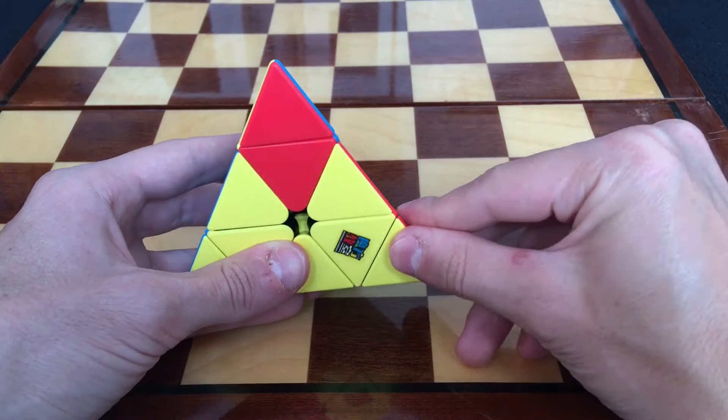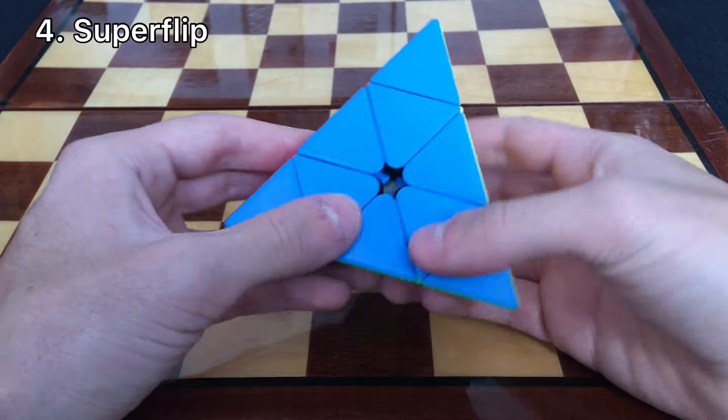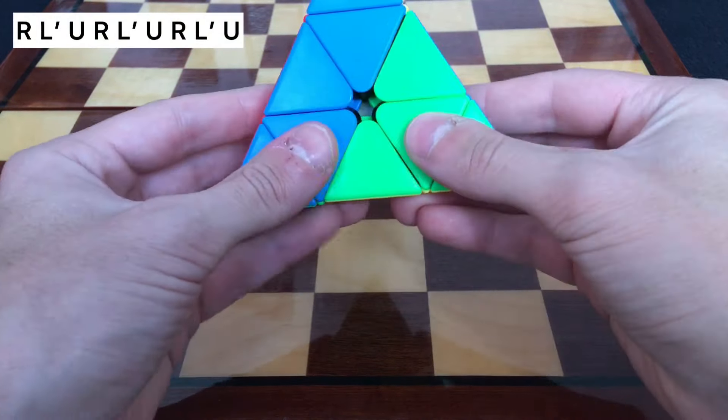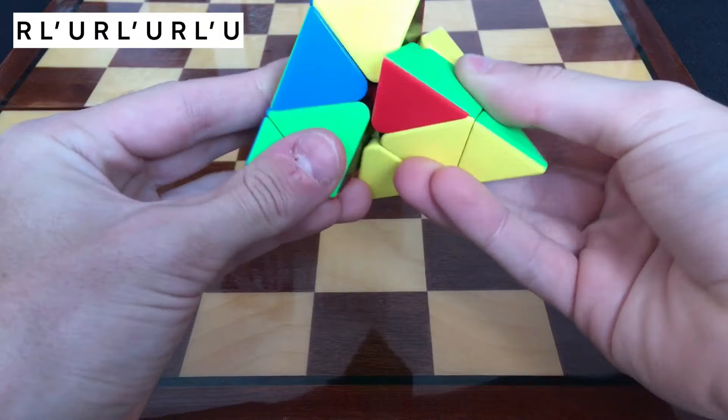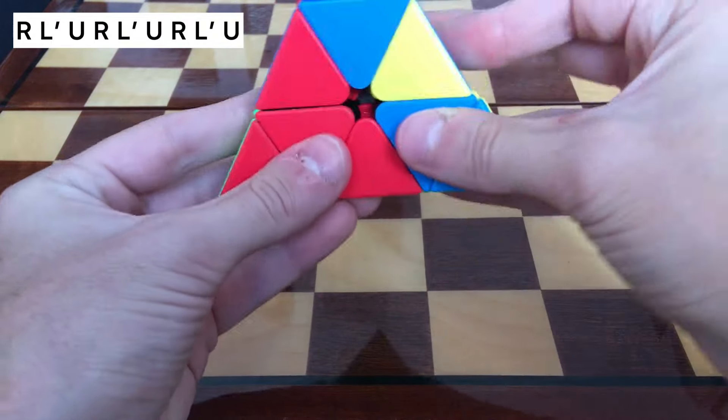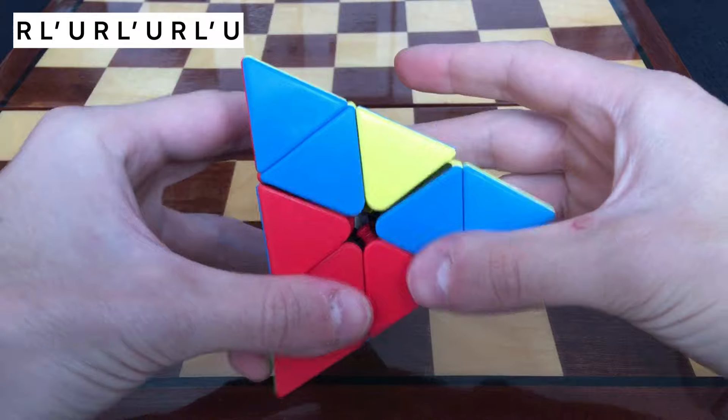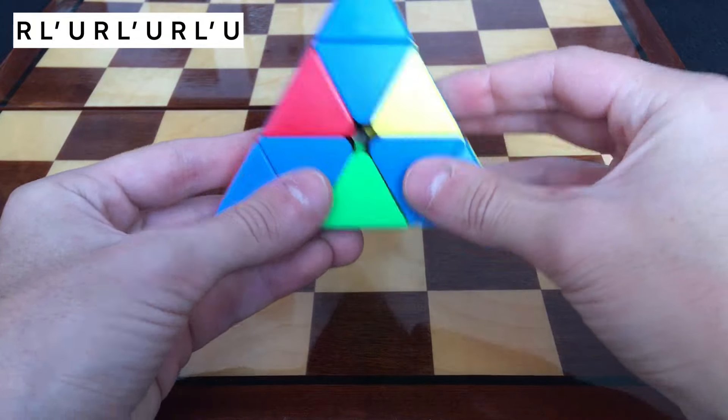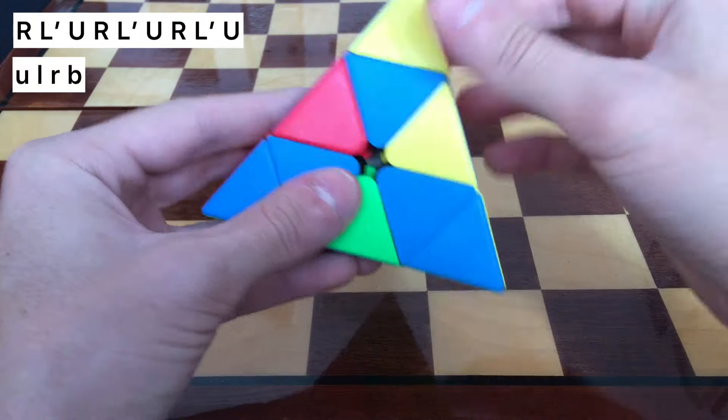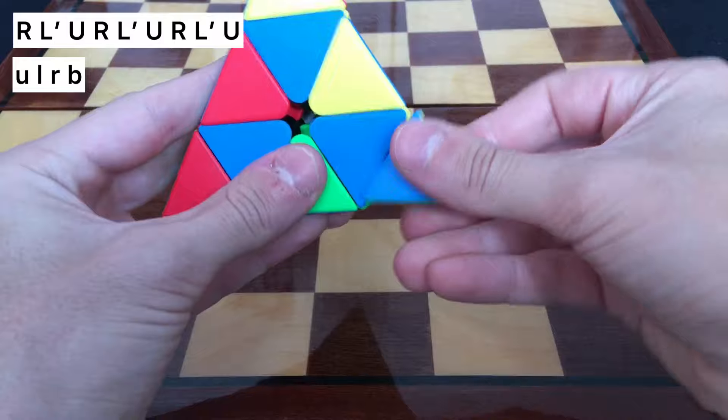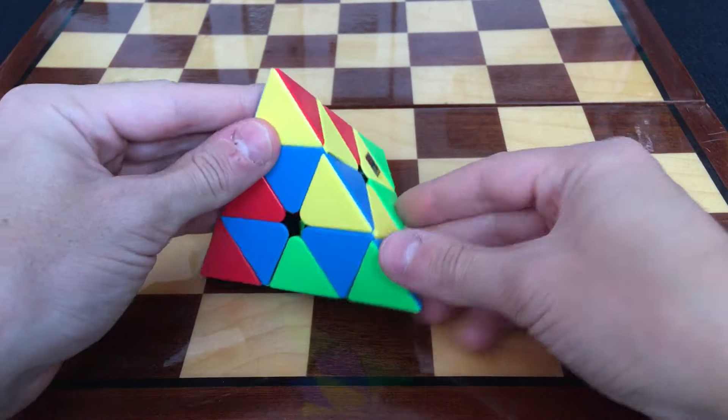Now I'll bring it back to this side. Now the famous super flip: do this algorithm R L' U R L' U R L' U, and now the tips U L R Back. There we go, we super flipped the Pyraminx.